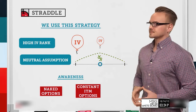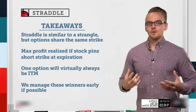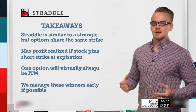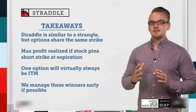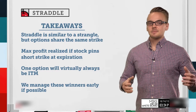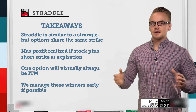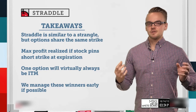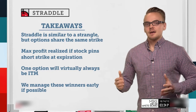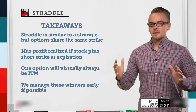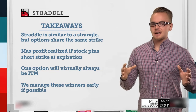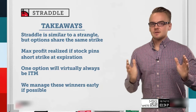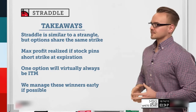Let's wrap up the takeaways for the straddle. First, a straddle is similar to a strangle, but the options share the same strike price. With strangles, we're selling an out-of-the-money put and an out-of-the-money call on different strike prices — same expiration but different strikes. It's also an undefined-risk, neutral strategy with a pretty wide break-even on either side. However, with out-of-the-money options in a strangle, we give ourselves a little more leeway in terms of either option going in the money.